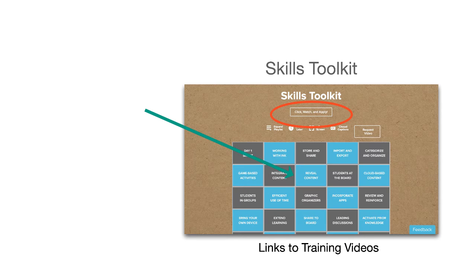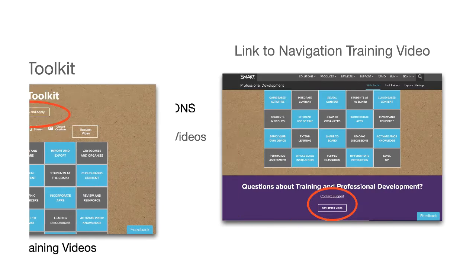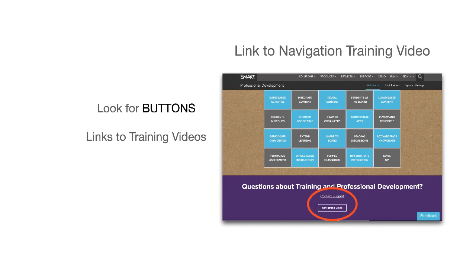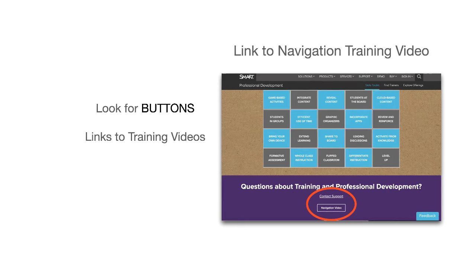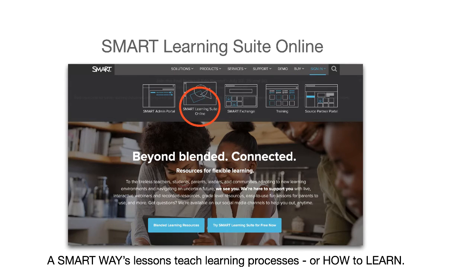But for our purposes we're going to simplify things. The Skills Toolkit is a user-friendly way to find the training you'll need. Becoming familiar with Smart Learning Suite Online is a great way to reach students and parents with your lessons.